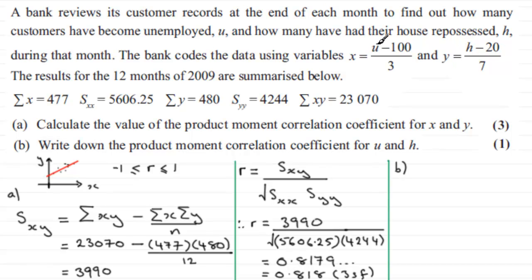These are linear transformations. If you were to rearrange this for u, you would get u = 3x + 100. This is a linear transformation. And if we make h the subject here, h would be equal to 7y + 20, again a linear transformation. So whenever you get this, the product moment correlation coefficient always remains exactly the same.